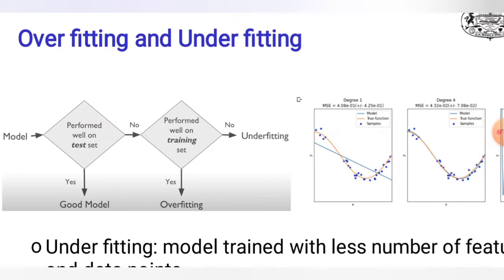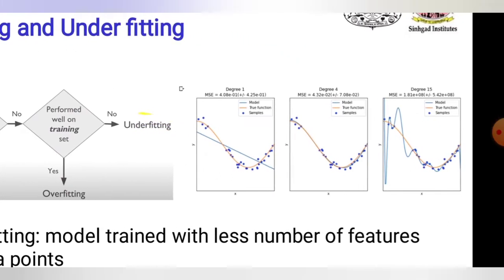To summarize the conditions for checking fitting: if the results perform very well on the test set, that is a good model. If it performs on the training set but not the test set, that is overfitting. If it does not perform well on the training set either, that is underfitting.